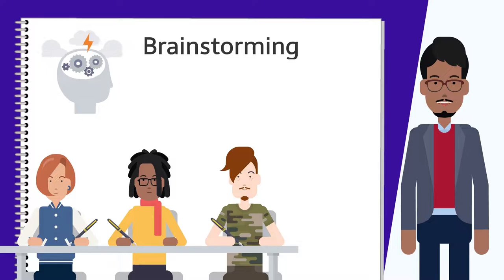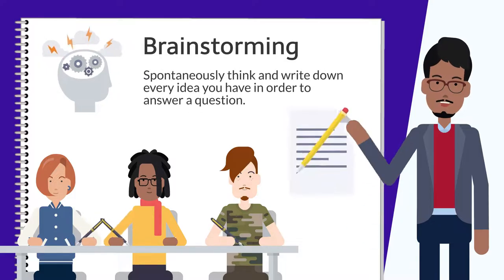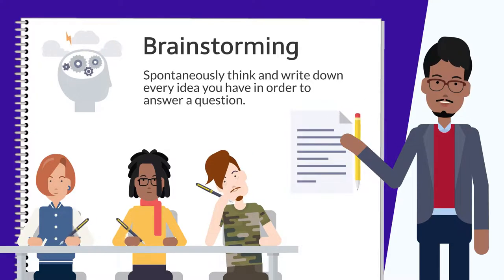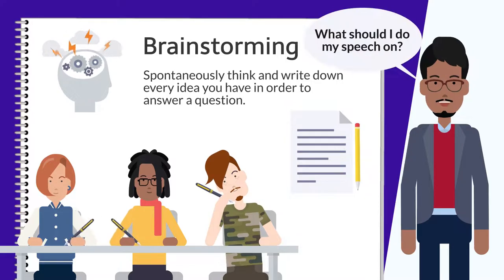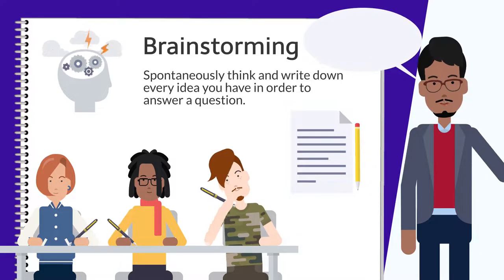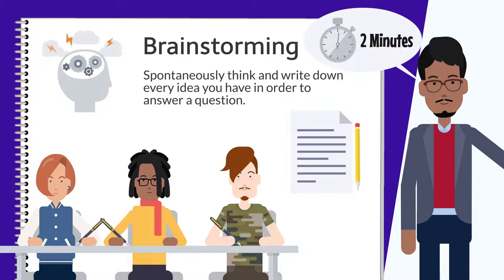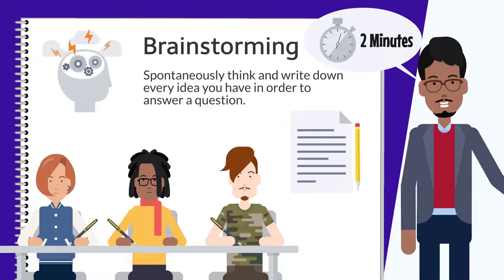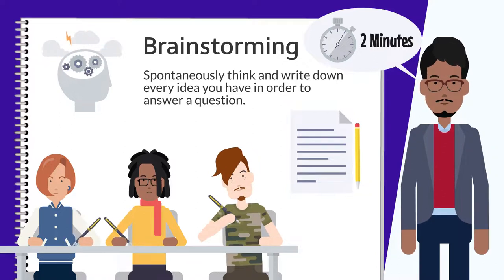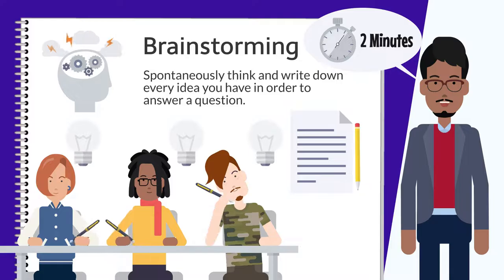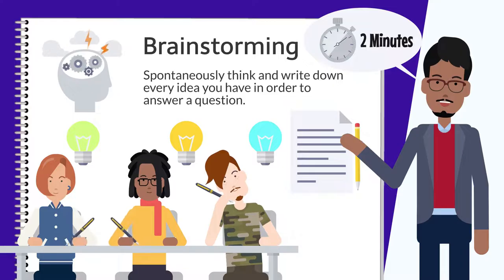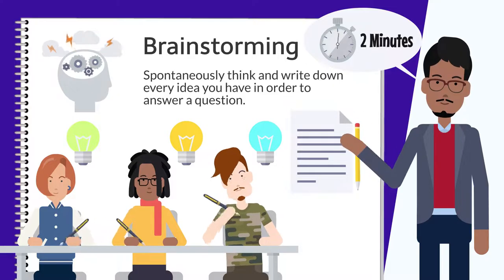Brainstorming is where you spontaneously think and write down every idea you have in order to answer a question. For instance, you may think, what should I do my speech on? And then, for the next two minutes, you'll list every idea you have. Leave nothing out, no matter how ridiculous — you never know where inspiration may come from. Brainstorming gives you a list you can choose your topic from.